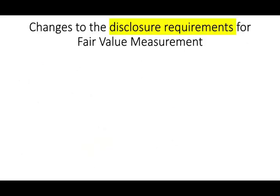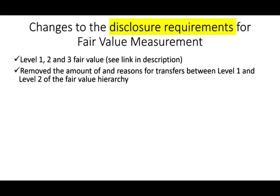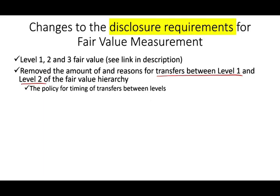The third topic is the changes to the disclosure requirement of fair value measurement. If you don't know what level one, level two, and level three fair value are, I have a link in the description. Under the changes, they remove the requirement for the amount and reasons for transfers between level one and level two, and also the policy for timing of transfers between levels. The disclosure is now only required for level three valuation.